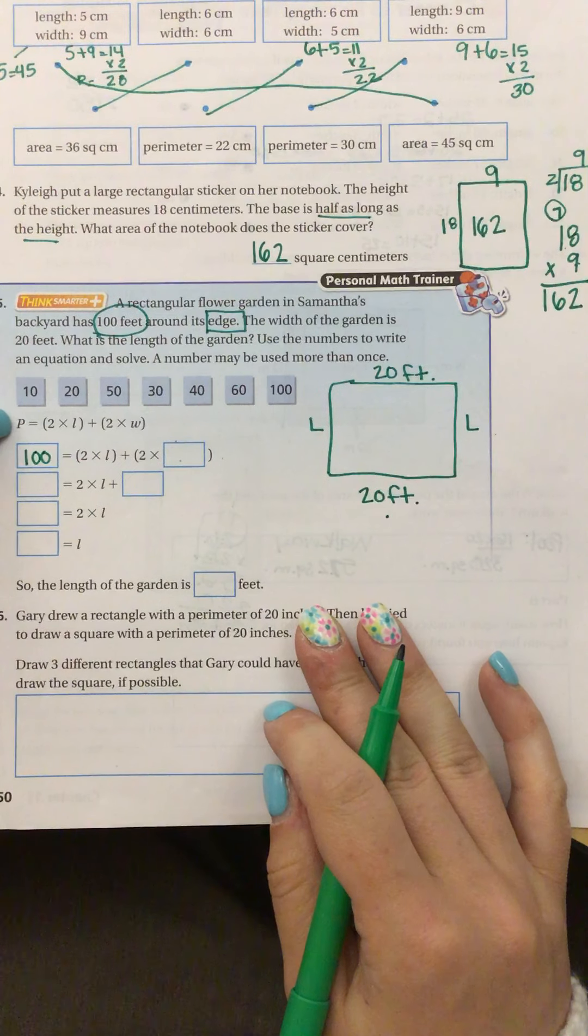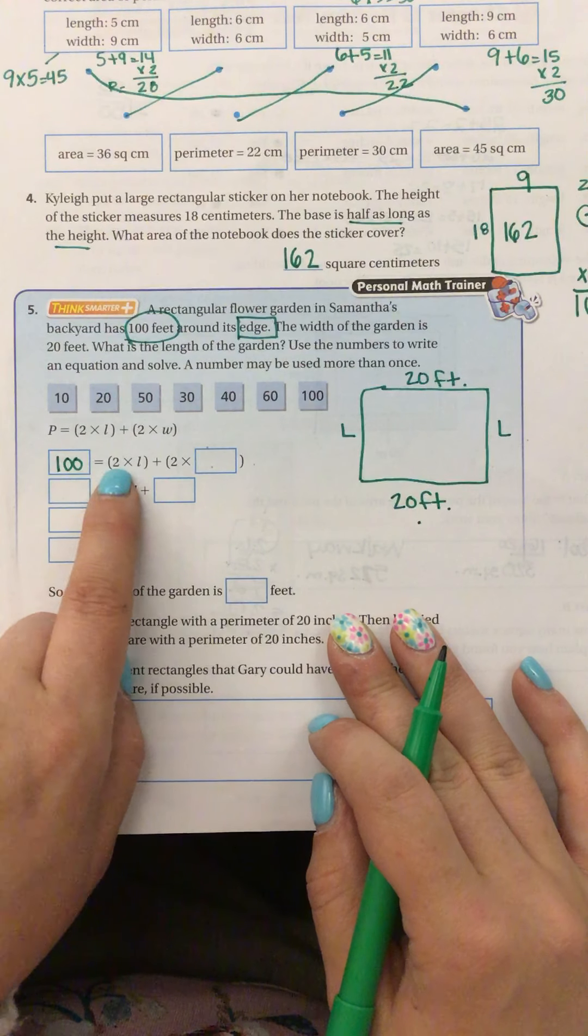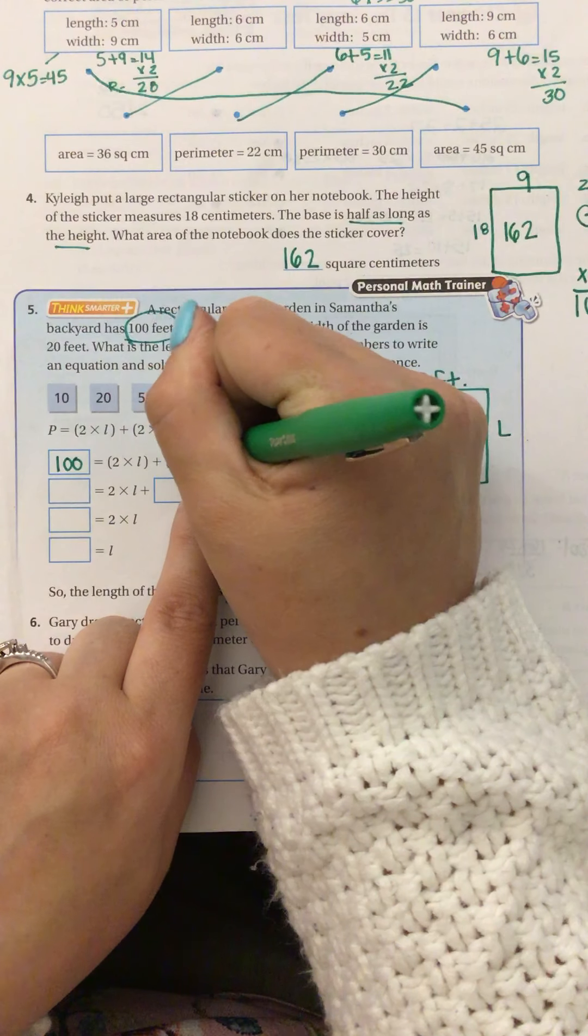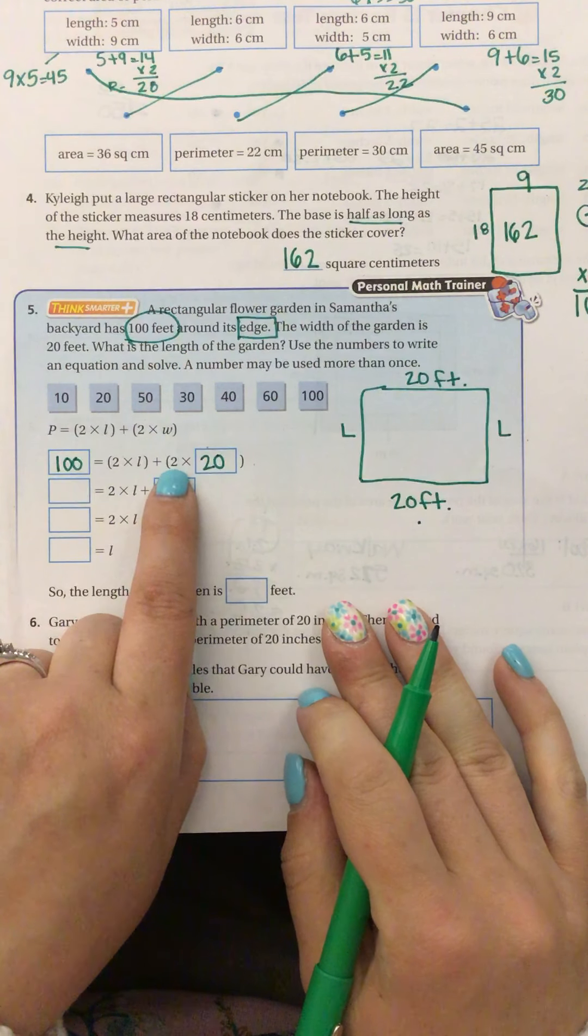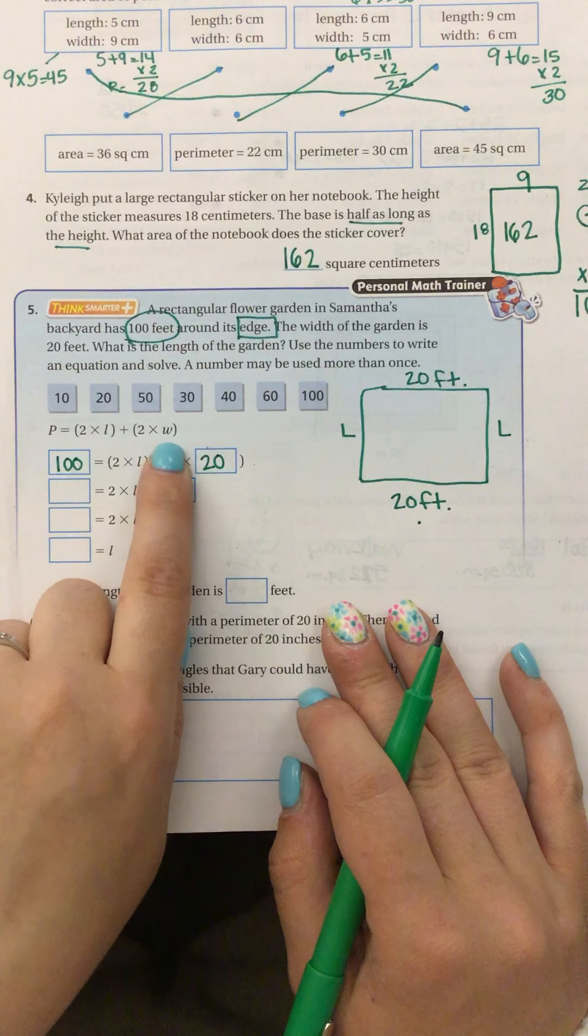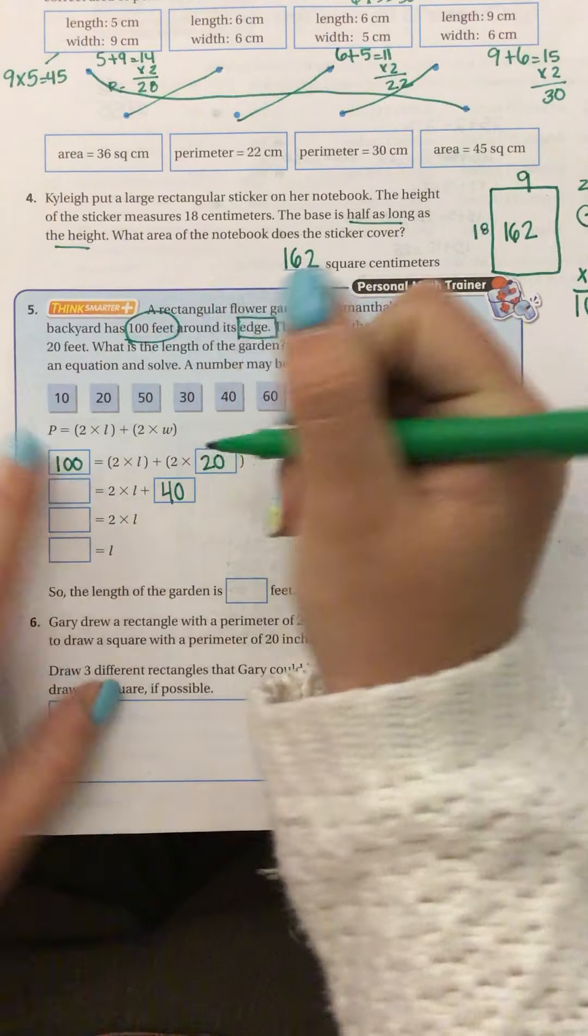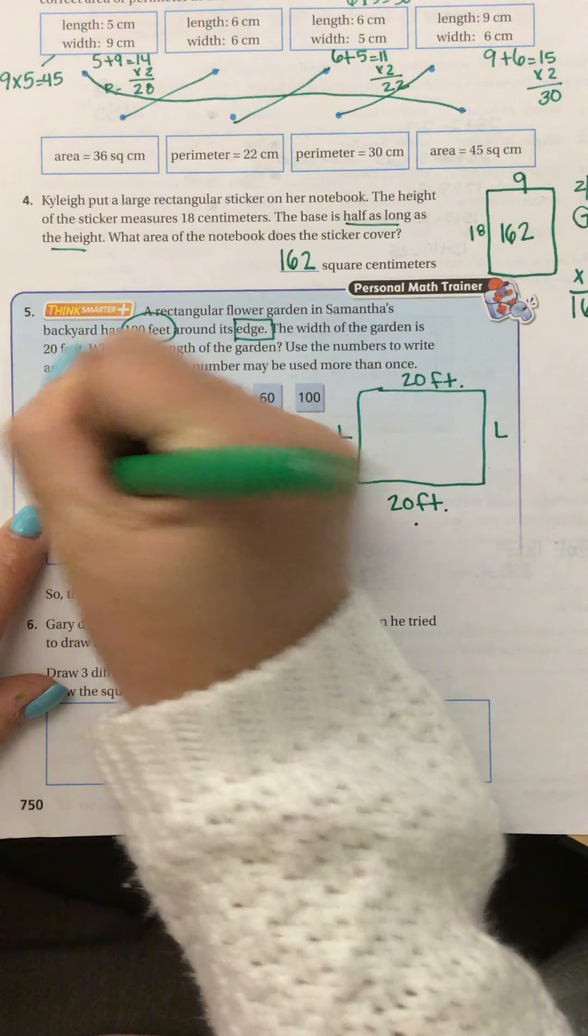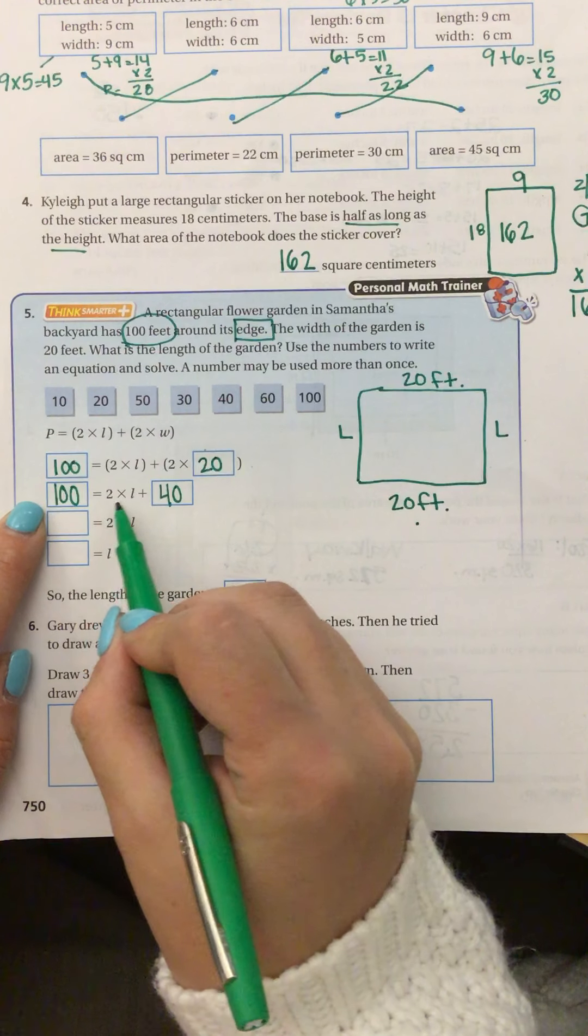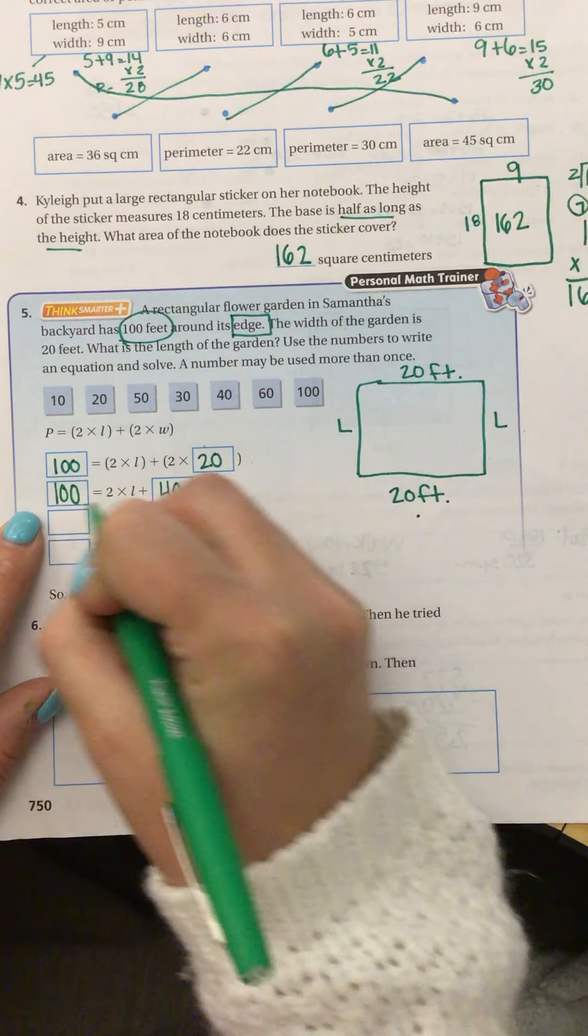I know that if it says that around the entire edge is 100, that means 100 is the perimeter. So I'm going to replace the P with 100 because I know the value. 2 times the length, well, I still don't know the length, but I know the width and the width is 20. So I can say in my perimeter formula, 2 times the length plus 2 times the width. Well, 2 times 20 is 40. I'm just going to carry down this 100 because I'm not using it yet. So then I have 100 equals 2 times the length plus 40. I'm going to go ahead and subtract 40.